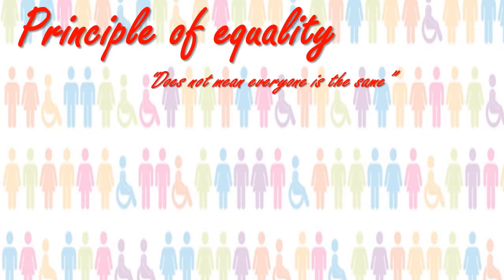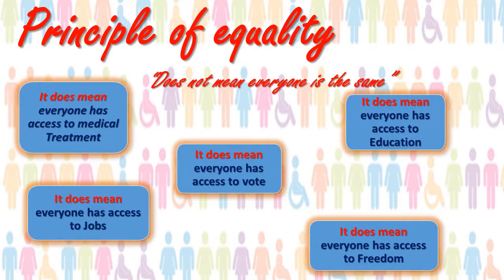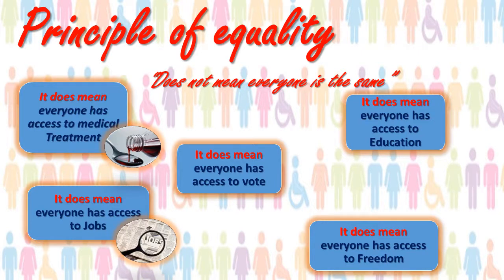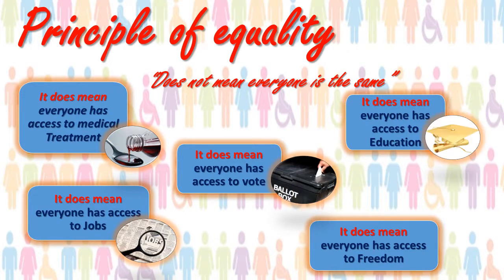The principle of equality does not mean everyone is the same. However, it does mean that everyone has access to medical treatment, jobs, the right to vote, and education and freedom. These are five examples, but equality really means that all people have access to these different areas and others as well.